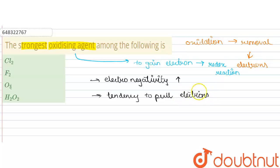And as its tendency to pull electrons increases, the stronger oxidizing agent it will be. So because of these two reasons, the oxidizing agent becomes stronger.